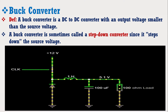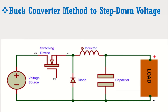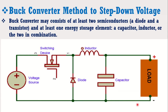Consider the figure which shows the circuit diagram of the buck converter. It may be noted that the buck converter may consist of at least two semiconductors such as a diode and a transistor, and at least one energy storage element such as a capacitor or inductor, or both in combination.